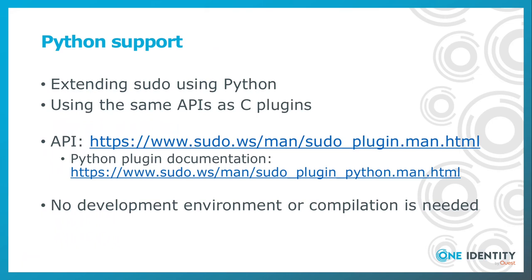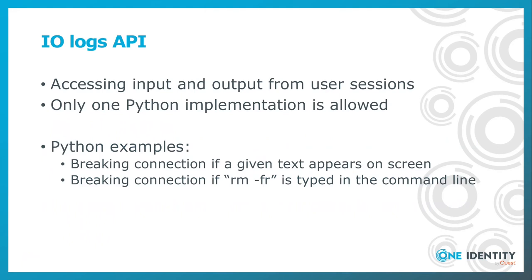sudo 1.9 also introduced Python support. You can extend sudo using Python scripts using the same APIs as you can use for C-based plugins. The advantage of Python is that there is no need for a dedicated development environment or compiling your software. One of the most popular APIs is the IOLOGS API, which lets you access any input and output from user sessions. For example, using Python, you can break a session if a given text appears on screen, or analyze the command line and break a session if you see something suspicious there.